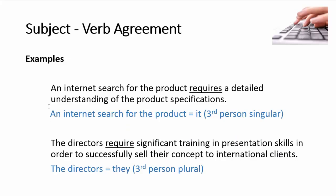In the first example: 'An internet search for the product requires a detailed understanding of the product specifications.' An internet search for the product equals 'it' — it's the third person singular. And because of that, to make the verb agree, we need to put the 's' on the end: requires. That's the subject, that's the verb, and that's the predicate at the end.